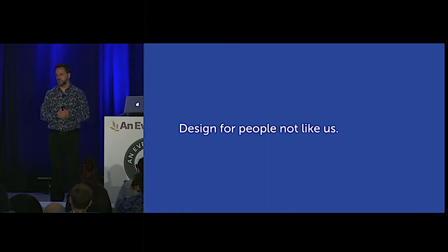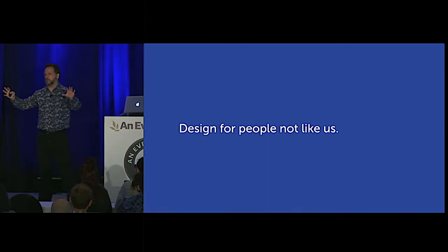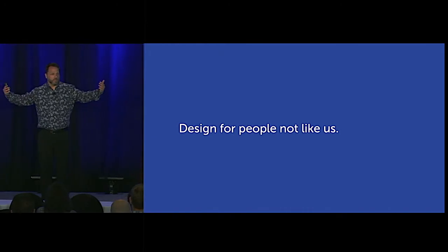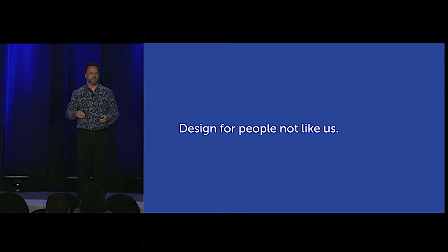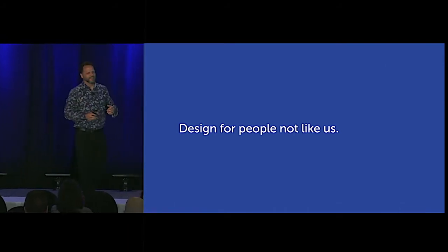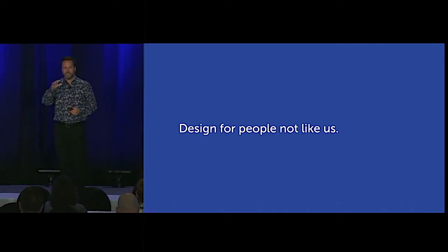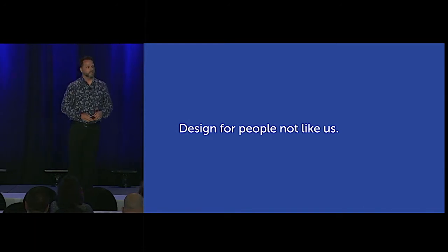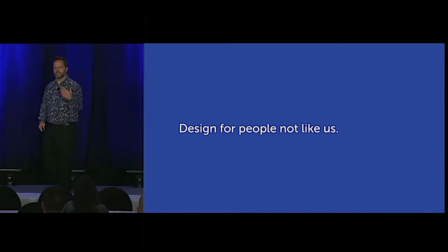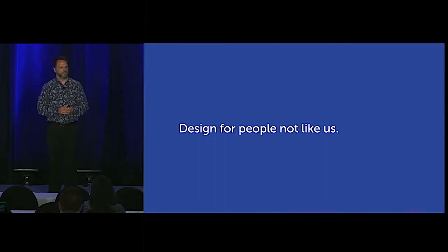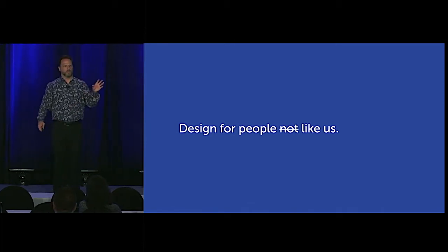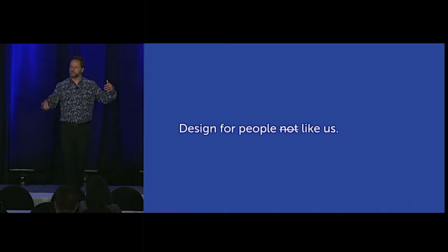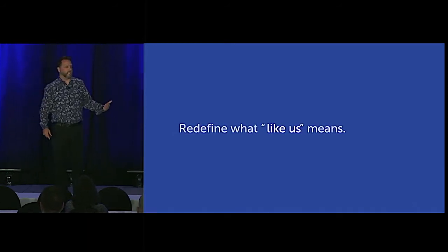Ultimately we hear this phrase a lot — we need to design for people that are not like us. But I actually want us to design for people like us, but we need to redefine what 'like us' actually means. When we think of designing for people that are not like us, particularly in terms of disability, if I don't have a disability, I'm going to design for people like me out of natural instinct. I want to get myself out of that mindset.